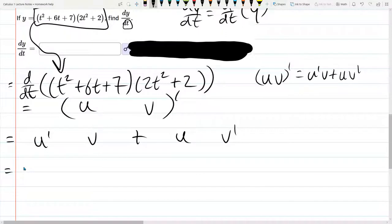We're ready to compute these. Well, let me write them out first. We'll compute them in a second. u is t squared plus 6t plus 7. That's u prime times v, 2t squared plus 2.